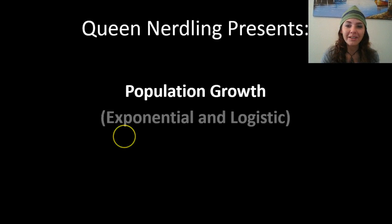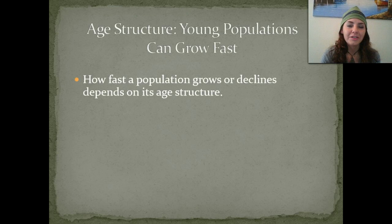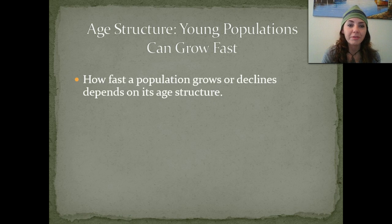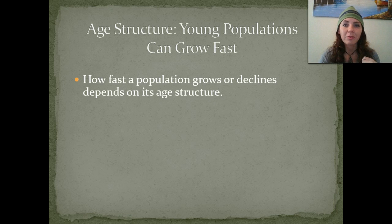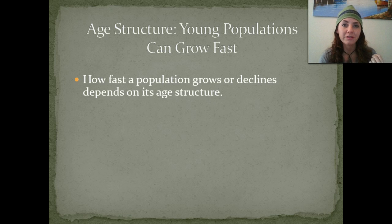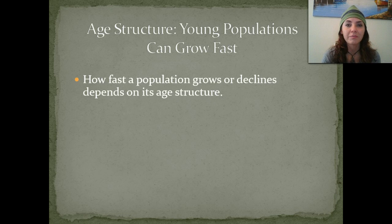Greetings, new Go Nerdlings. In this podcast, I'm going to be discussing population growth. So we're going to start off with age structure. Young populations can grow very, very rapidly. How fast a population grows or declines depends on its age structure, meaning how many people are pre-reproductive, how many are at the reproductive age, and how many people in that population are post-reproductive.